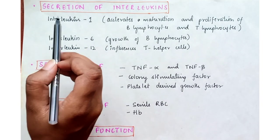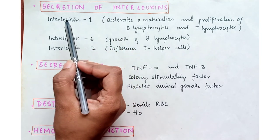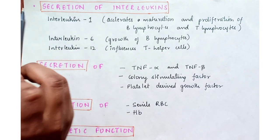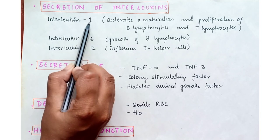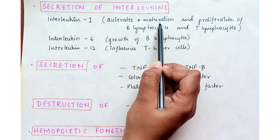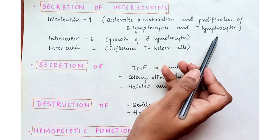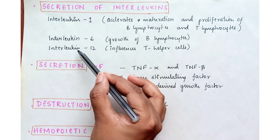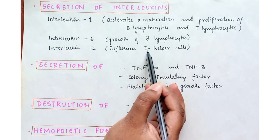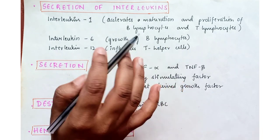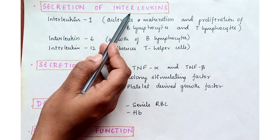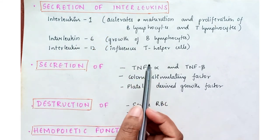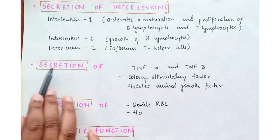Macrophages also secrete interleukins — specifically interleukin 1, interleukin 6, and interleukin 12. Interleukin 1 activates the maturation and proliferation of B-lymphocytes and T-lymphocytes. Interleukin 6 helps in the growth of B-lymphocytes. Interleukin 12 influences the T-helper cells. All three interleukins secreted by macrophages directly or indirectly help in the growth, maturation, and development of B-lymphocytes.